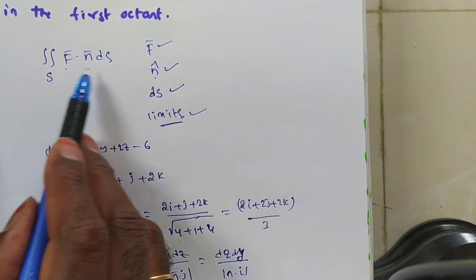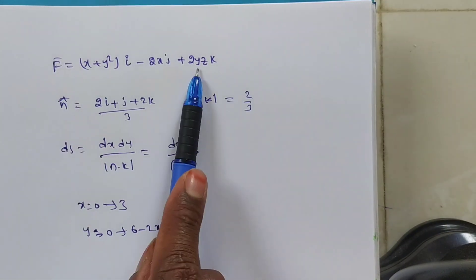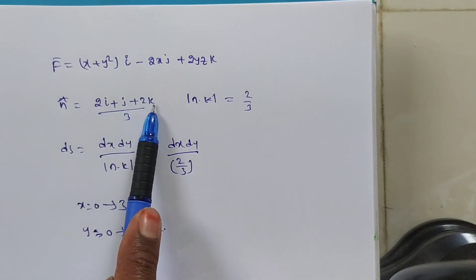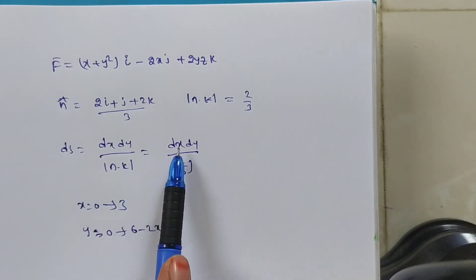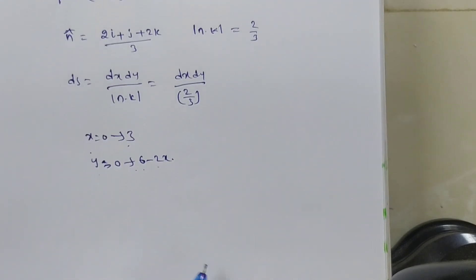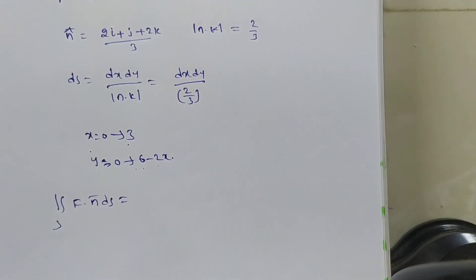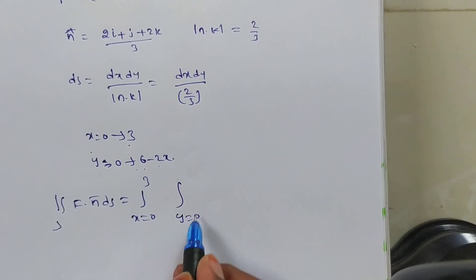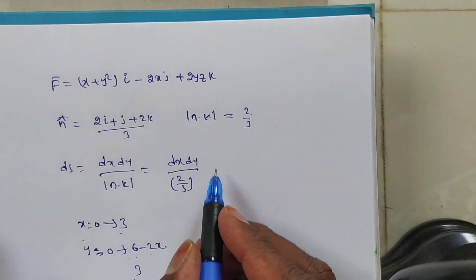So now we have all the values to evaluate the surface integral. f̄ is given, n̂ = (2i + j + 2k)/3, and n̄·k = 2/3. dS = dx dy / (2/3). The limits of x are 0 to 3, and y goes from 0 to 6 − 2x. Now the surface integral ∬_S f̄·n̂ dS equals the double integral with these limits.